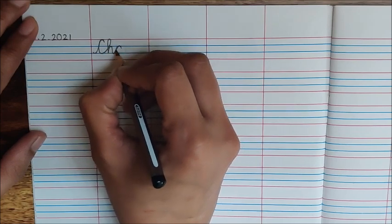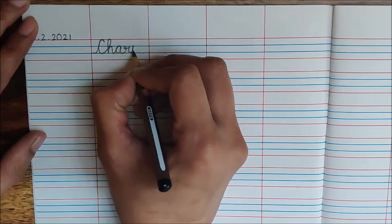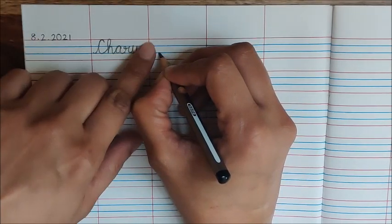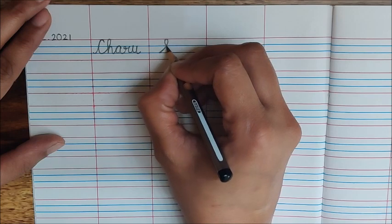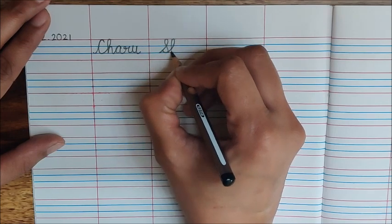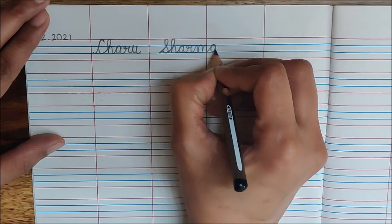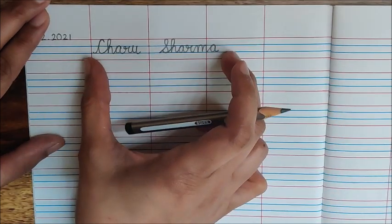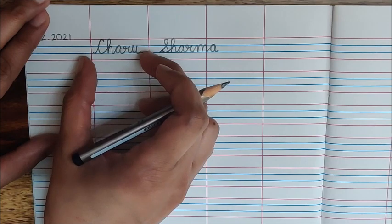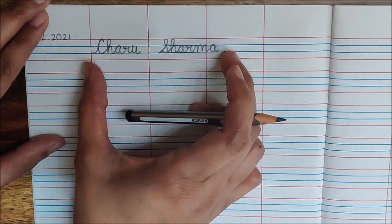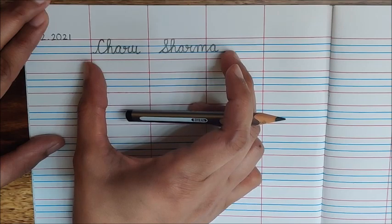then C-H-A-R-U. I will leave some gap and now I will write my surname. S-H-A-R-M-A. This is my full name. This is the first name and this is the surname. Like this you will write your full name in cursive.